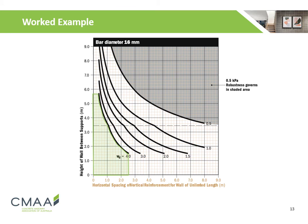Here is a design chart from our MA55 manual, which can be found on our CMAA website. To read this graph, anything below the tracing curve is deemed okay for use. Here, a 2.7 m high wall using standard 190 mm thick blocks, with centrally located 16 mm reinforcement bars spaced at 1 m, is okay for a design loading of 4 kPa.